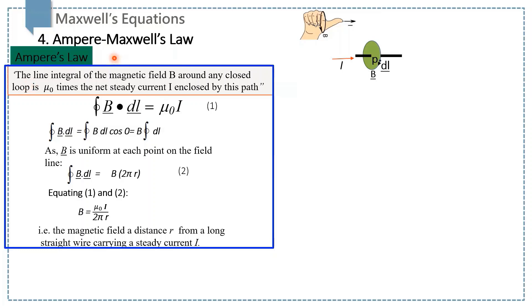In this lecture, we will discuss Ampere-Maxwell's law. First, what is Ampere's law? This law states that the line integral of the magnetic field around any closed path is mu0 times the net steady current enclosed by that path.